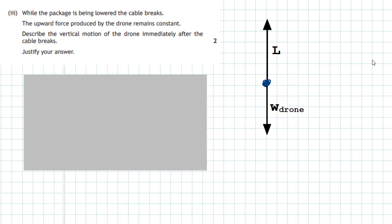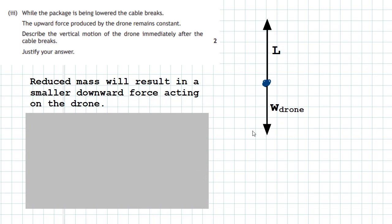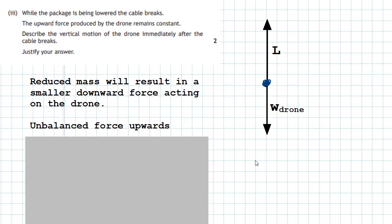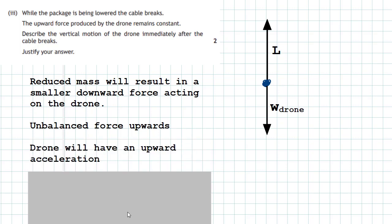The drone will immediately accelerate upwards because there is now an unbalanced force acting on it. To justify the answer: reduced mass from the package falling off results in a smaller downward force — a smaller weight. This means an unbalanced force acting upwards, because the lift force is now bigger than the weight of the drone. Therefore the drone has an upward acceleration, which you justify by drawing the diagram and explaining the argument.